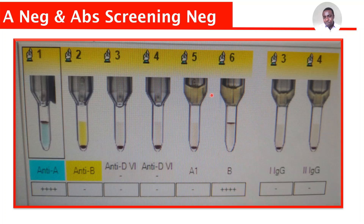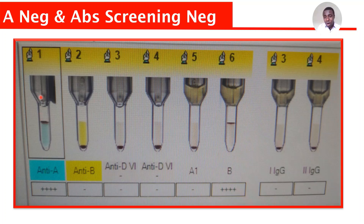The key to reading the card is: once the cells float up, that is positive; once they are down, it is negative. The strength of the positive is determined by how high the cells float. If they float completely to the top, that is 4+. You can also get weak reactions: 1+, 2+, or 3+, as the case may be.